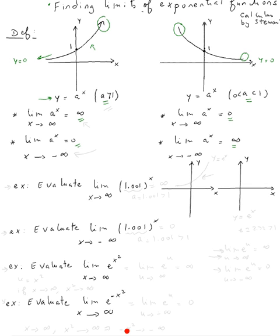So let's do this example — evaluate limits. First example: evaluate the limit of 1.001 to the x as x approaches infinity. Think of this as our a, so a equals 1.001, which is bigger than 1. So we are in that case, and the answer will be positive infinity.